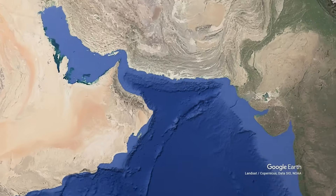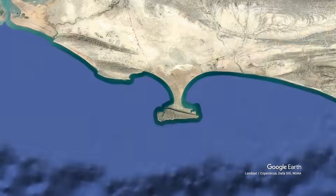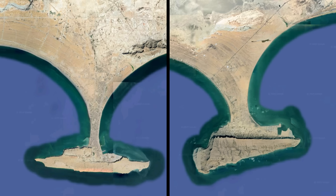If you go to the southern coast of Pakistan where it meets the Arabian Sea, you will see two strangely shaped peninsulas where you have these long elevated terraces connected to land by just a thin section of sand. In today's video, let's investigate how these hammerhead shaped peninsulas formed.